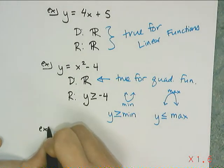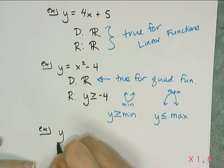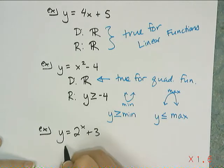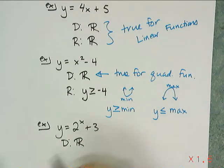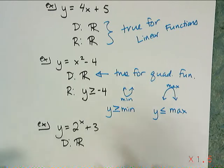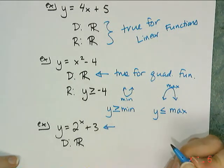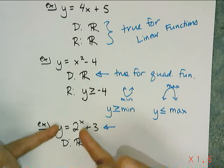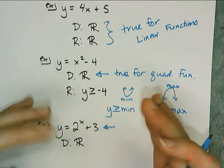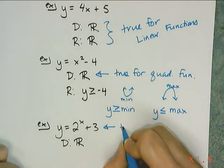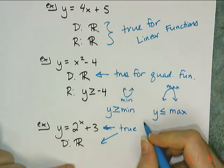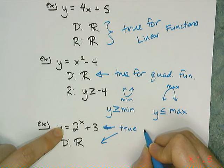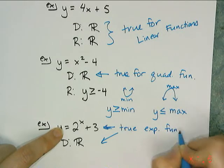Now let's look at exponentials — for example, y equals 2 to the x plus 3. The domain of all exponential functions happens to be all reals. You can raise 2 to any decimal power, even pi, and you'll get a real number output. So just trust me — the domain of exponential functions is all real.